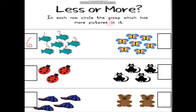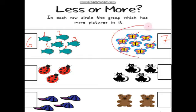Then we count the butterflies. You can cross them too. One, two, three, four, five, six, seven. And we write seven. Now we are going to circle the group which has more. Who is more — the fishes or the butterflies? The butterflies! Very good! The butterflies are more than the fishes. So we circle the butterflies.